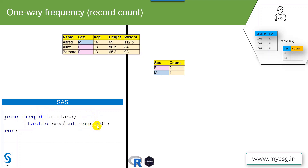We use the OUT= option on the TABLE statement to store the frequencies in an output dataset. Here we are creating a dataset called count01 and asking PROC FREQ to create a table showing how many records exist for each unique value of the sex variable. In the output dataset we get one row per unique value — one for M and one for F — with the record count stored in a variable called COUNT.